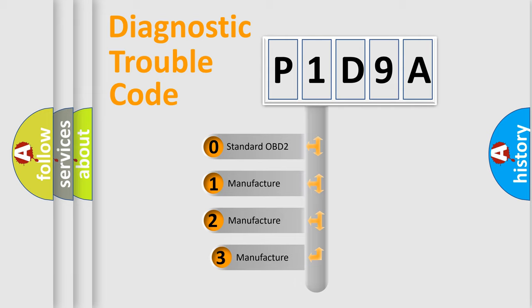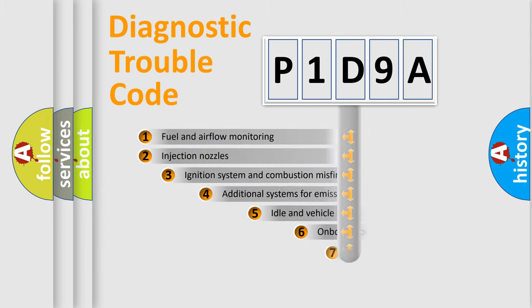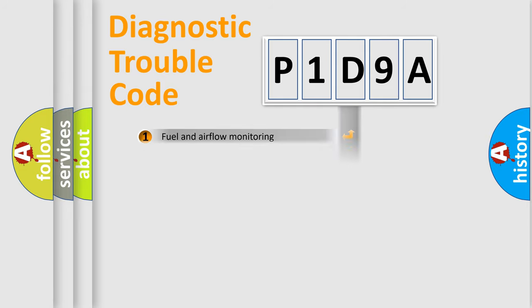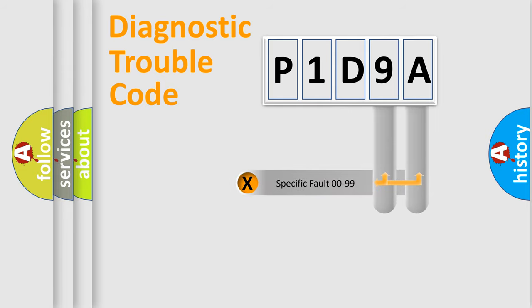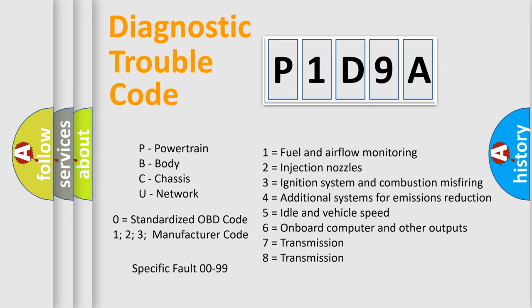If the second character is expressed as zero, it is a standardized error. In the case of numbers 1, 2, or 3, it is a more manufacturer-specific expression of a car-specific error. The third character specifies a subset of errors. This distribution is valid only for the standardized DTC code. Only the last two characters define the specific fault of the group, and this division is valid only if the second character code is expressed by the number zero.